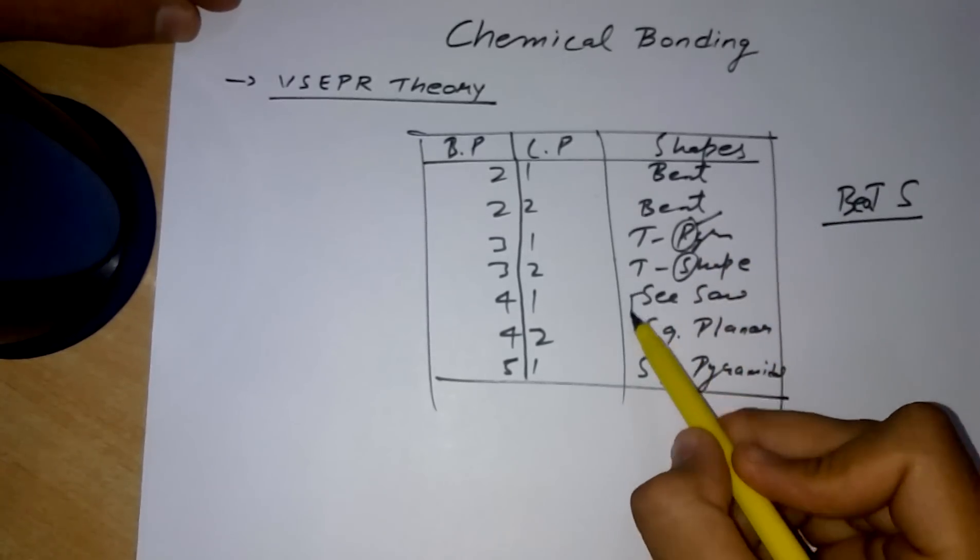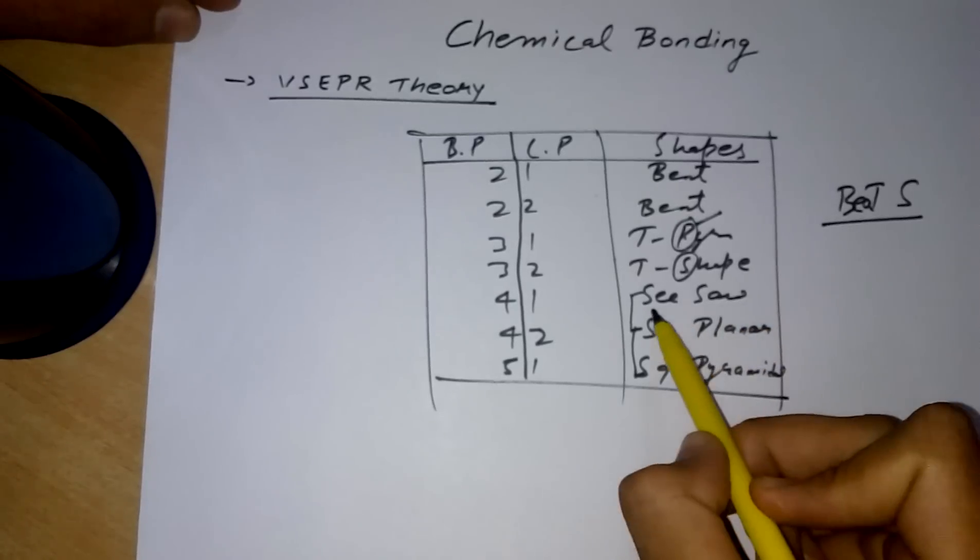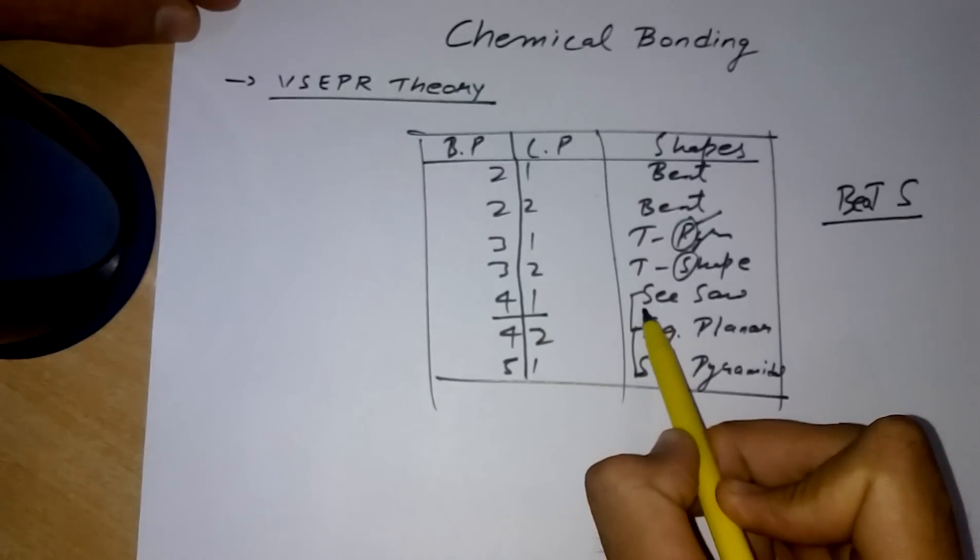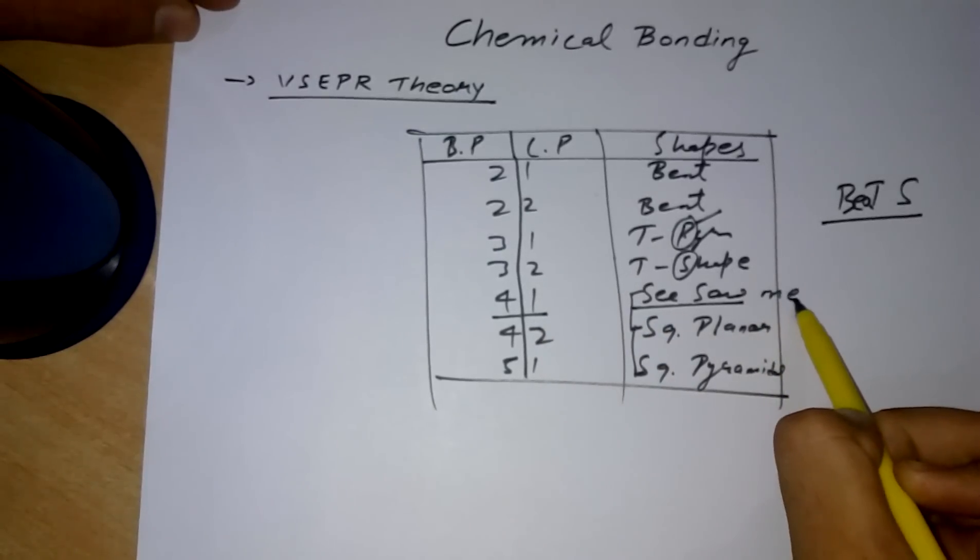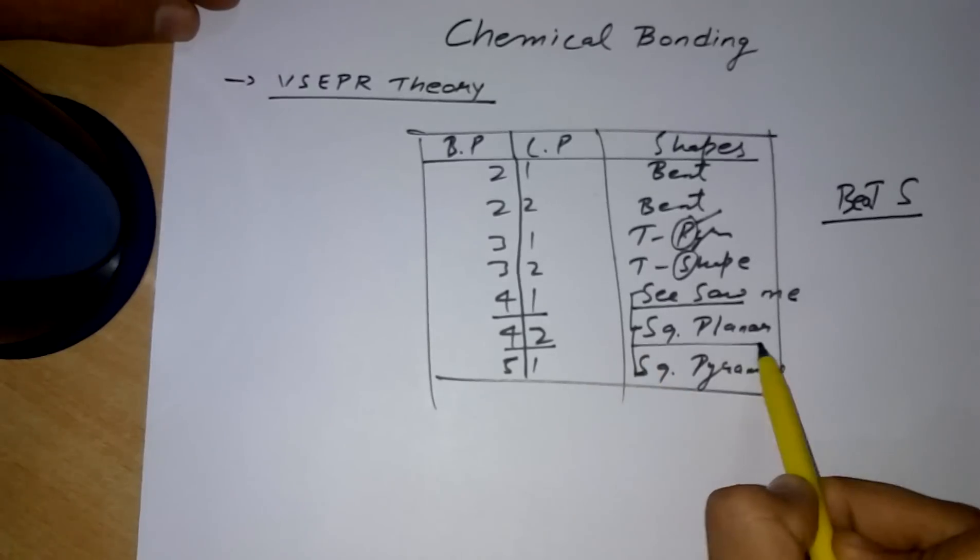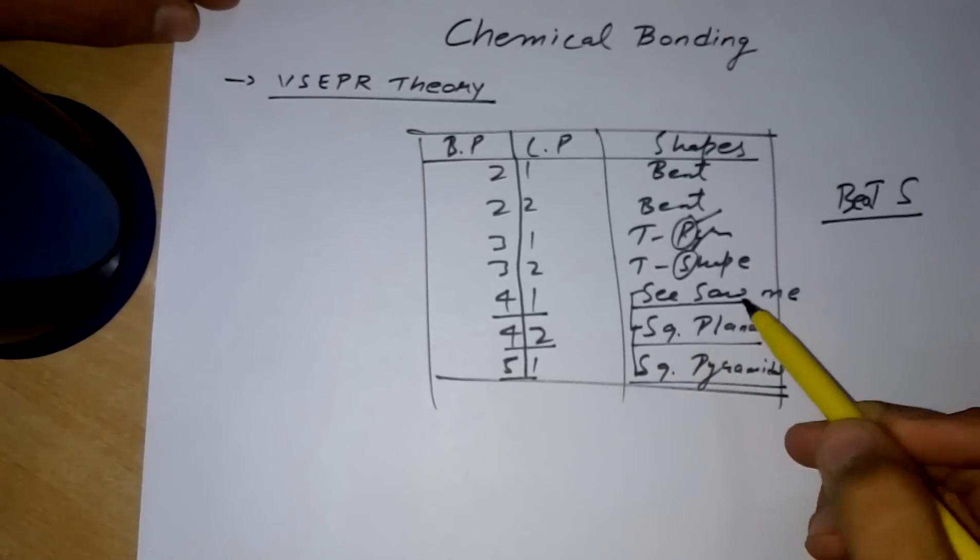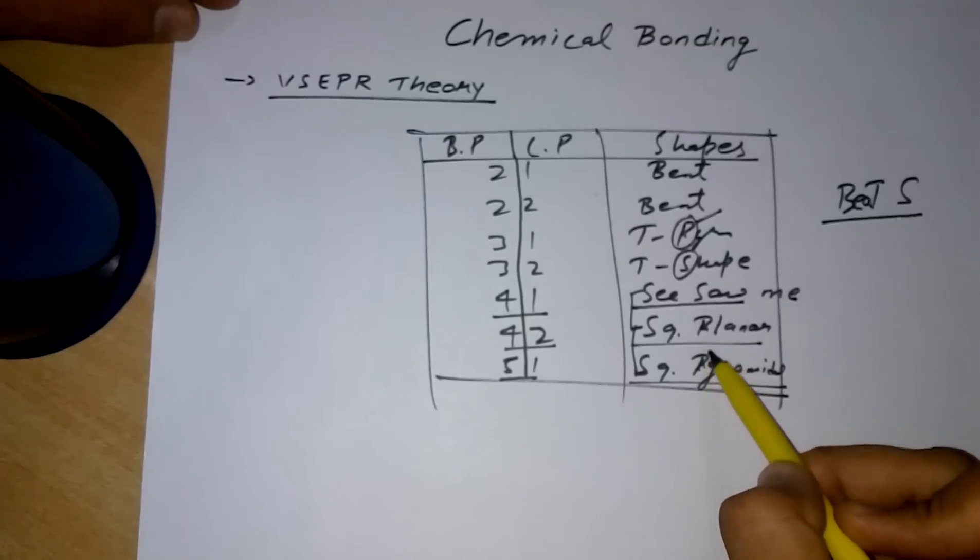At 41 street she saw me. We had 42 square planar and 51 square pyramidal. And if you look which one comes before in these two, you can see here.